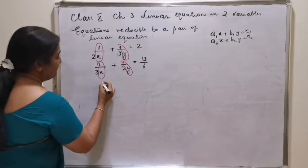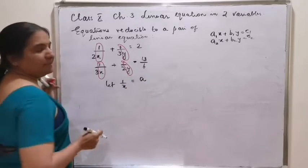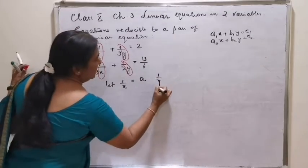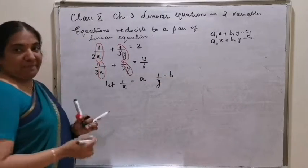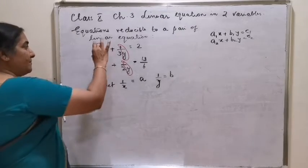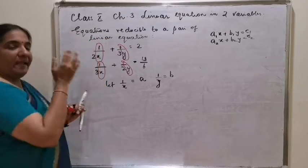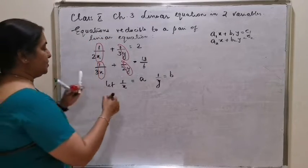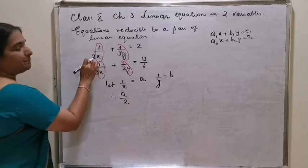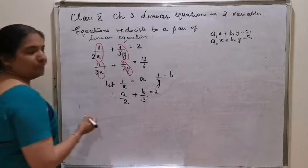The substitution is: let in both equations, the first term contains 1 by x and the second term contains 1 by y. Thus, the substitution is: let 1 by x be another letter a, and 1 by y is equal to b. So automatically, how will the equation turn? 1 by x takes the value a, so a will be in the numerator position. Therefore, a by 2 plus b by 3 is equal to 2.